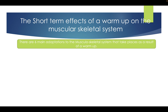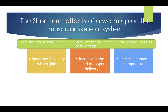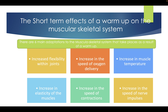There are six main adaptations of the musculoskeletal system that take place as a result of a warm-up: increased flexibility of the joints, increasing the speed of oxygen delivery, increasing muscle temperature, increasing elasticity of the muscles, increasing the speed of contractions, and increasing the speed of the nerve impulses.